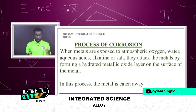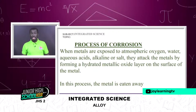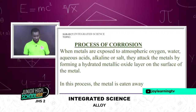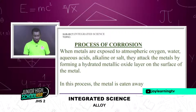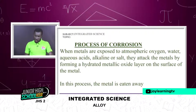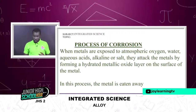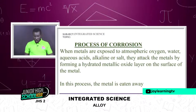Some processes of corrosion: when metals are exposed to atmospheric oxygen, water, aqueous acid, alkaline, or salt, these attack the metals by forming a hydrated metallic oxide layer on the surface of the metal. When metals are exposed to any acid, salt, water, or air, there is always a dry layer forming on the surface of the metal.